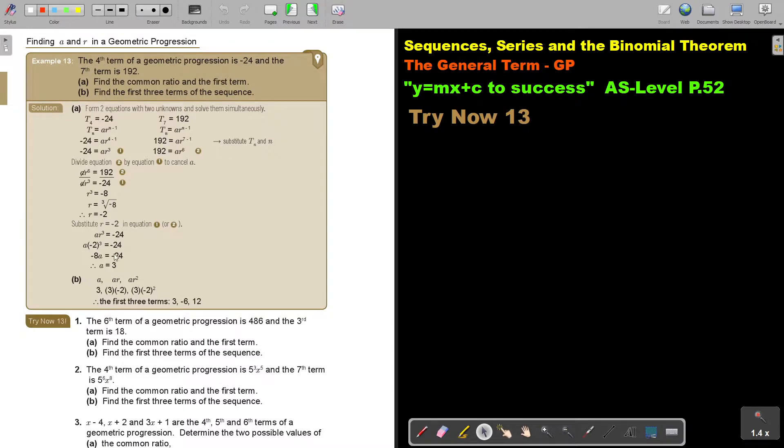Now, in this case, just like AP's, we are going to find the value of A and R. So, the fifth term of a geometrical progression is negative 24, and the seventh term is 192. Find the common ratio and the first term.